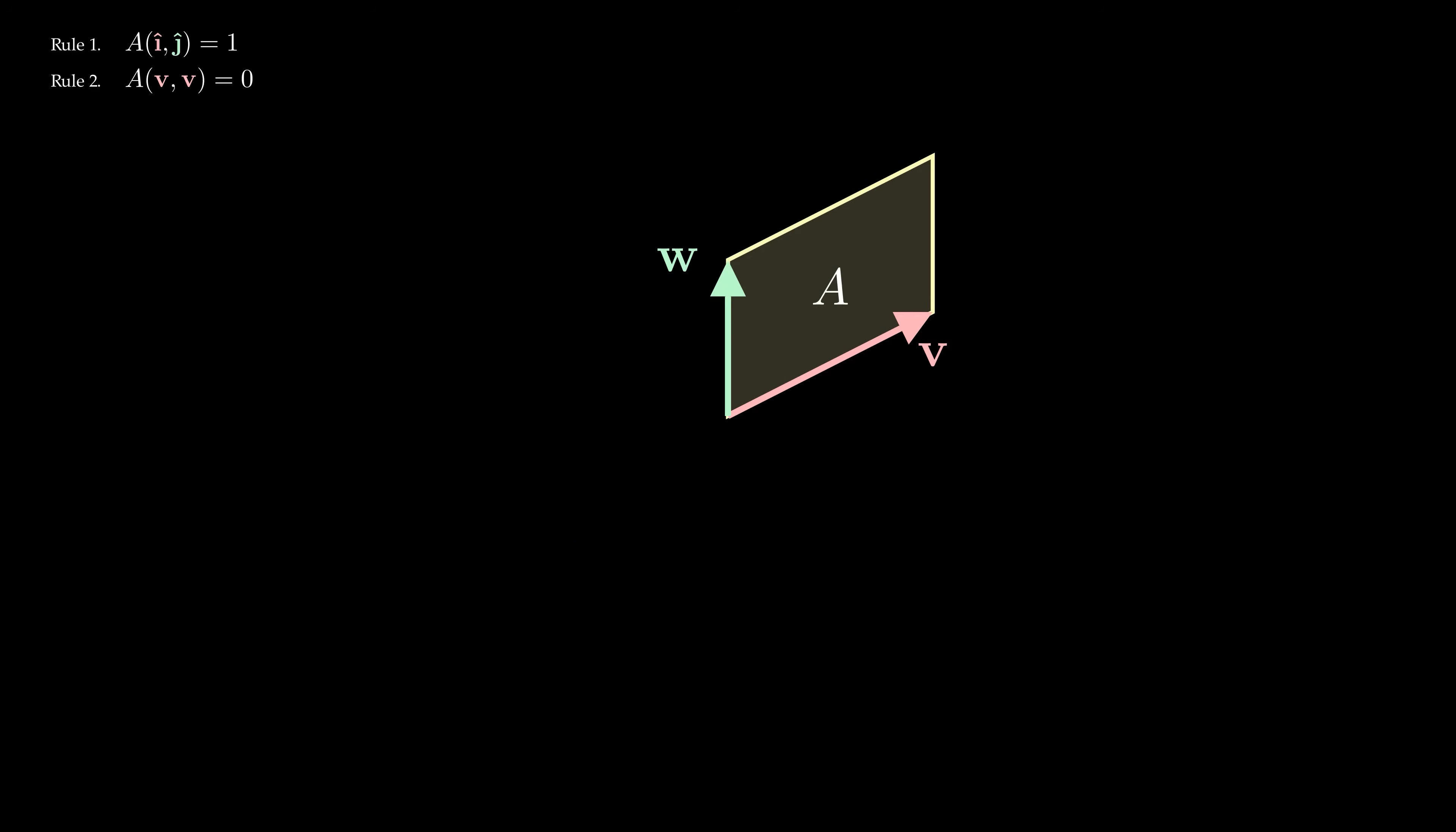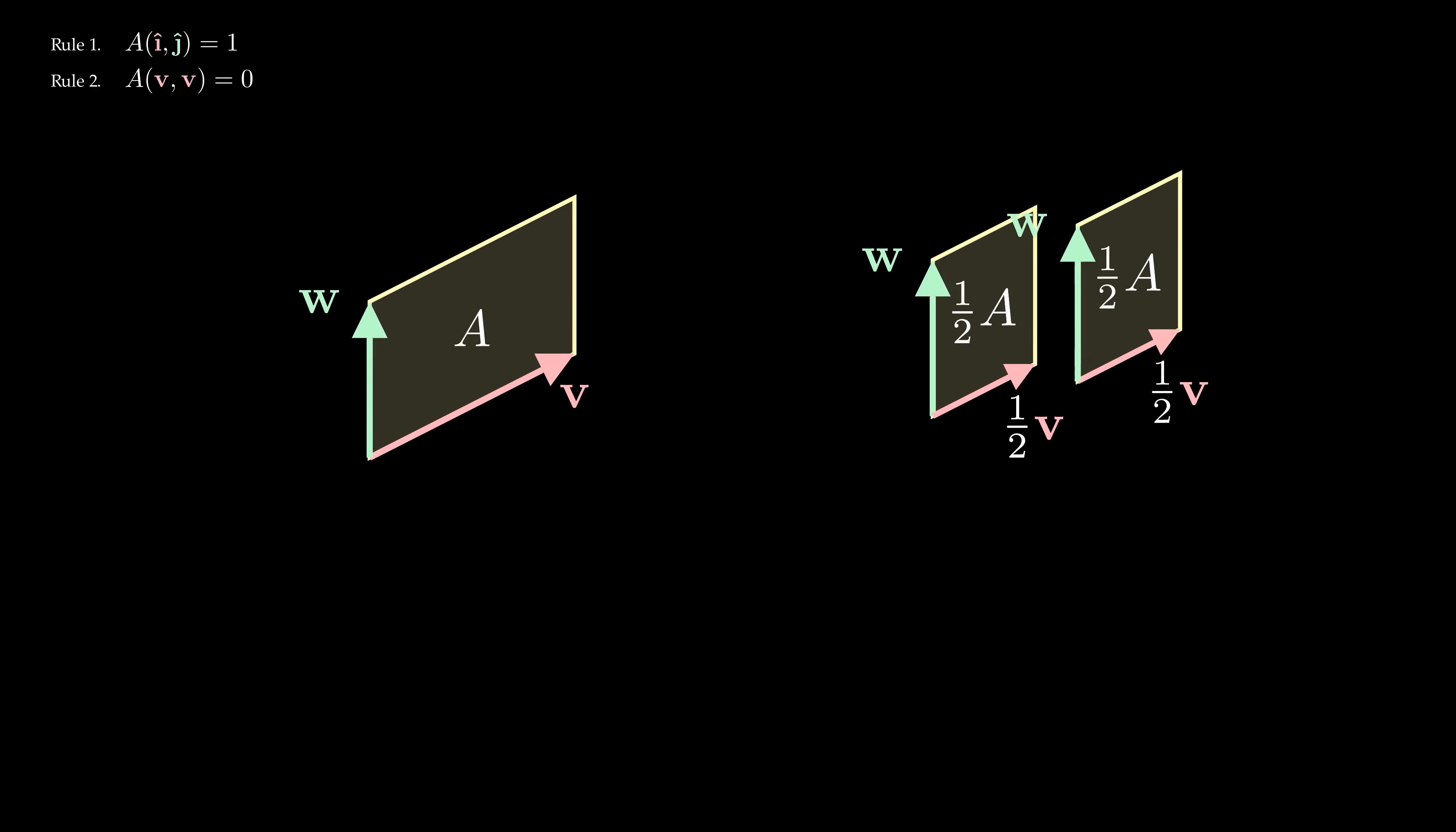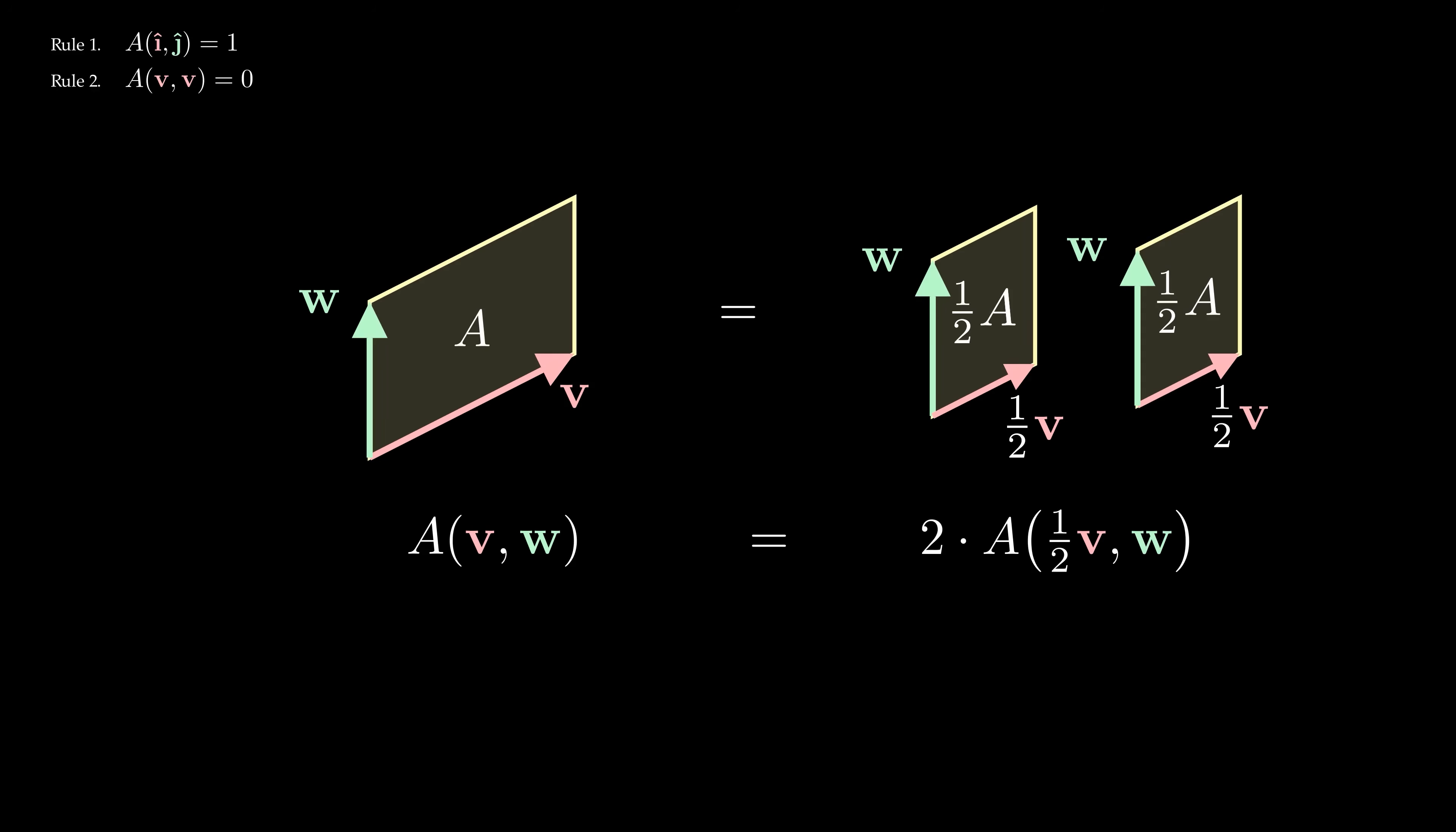Similarly, if we squish v to become half its original length, then the area seems to half as well. And this makes sense since two of the squished parallelograms can assemble to form the original parallelogram. Dividing both sides by 2, it looks like we're pulling the constant one-half out of the area function A.